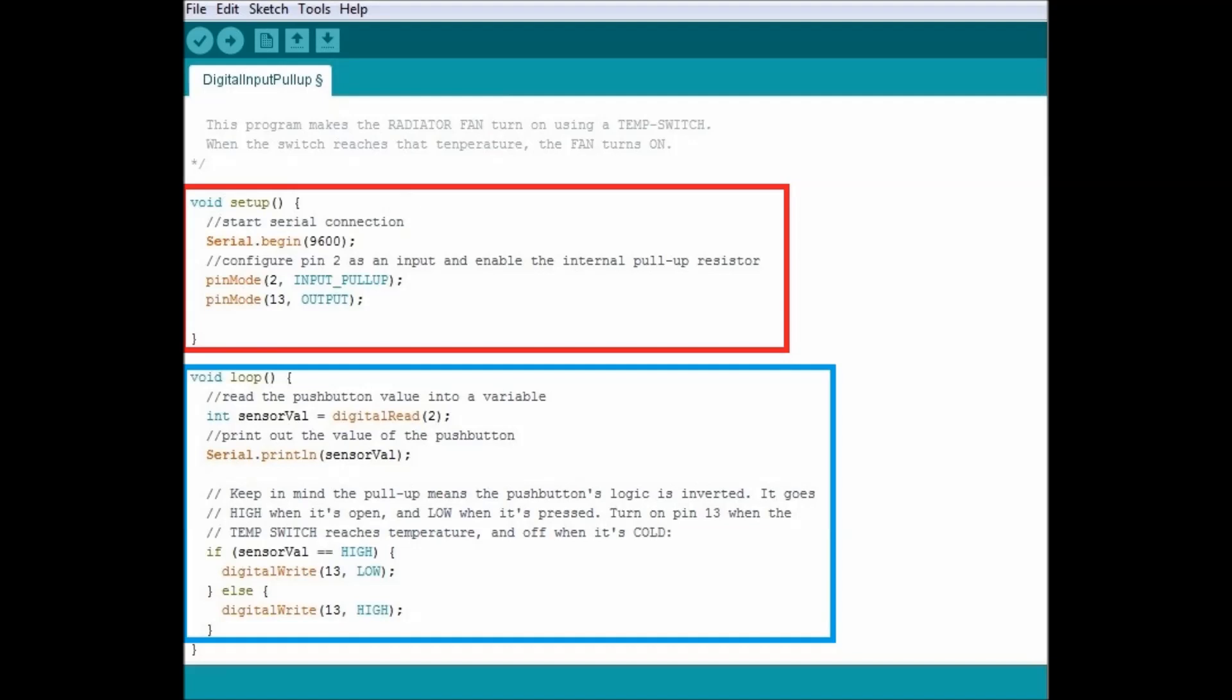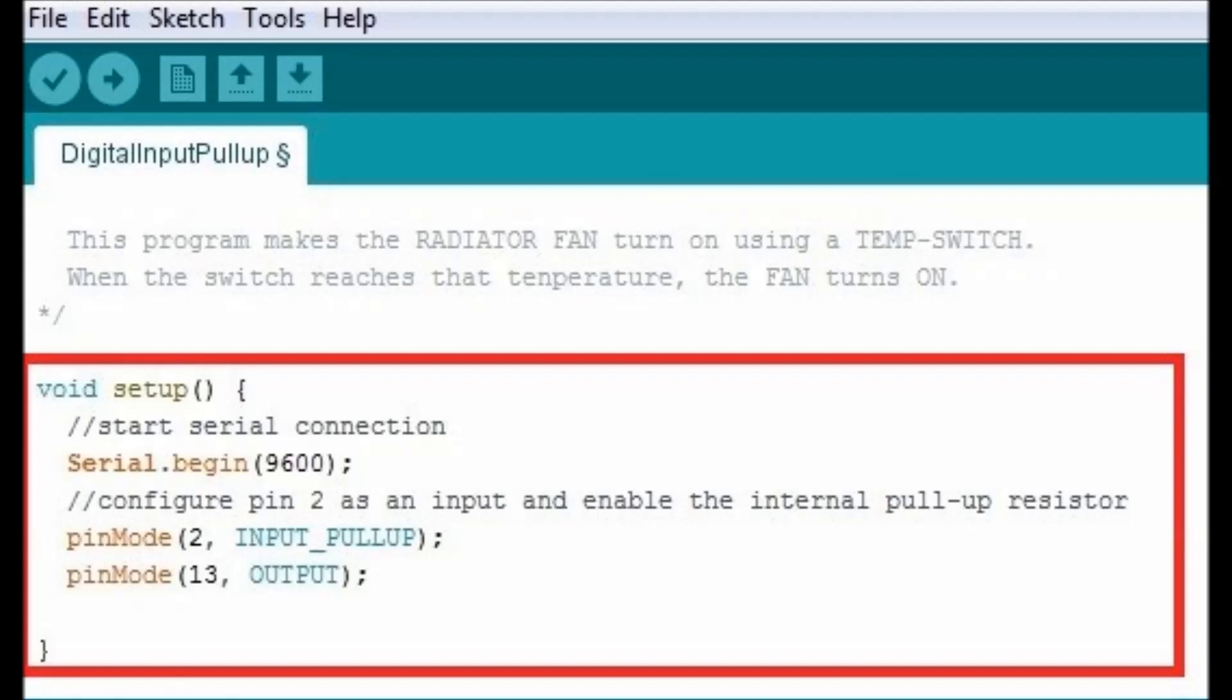So as you can see, this next diagram, we can see in red, it's the actual setup part. It sets up all these pins in this particular case. Pin number two is set as an input with a pull-up, meaning that this one connects to ground and that's when it does whatever it has to do. So it's a pull-up pin, pin number two, and pin number 13 is an output.